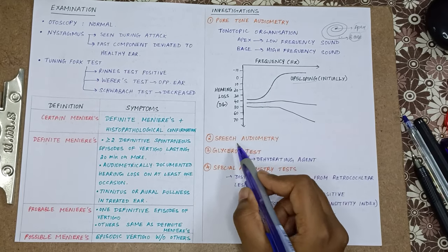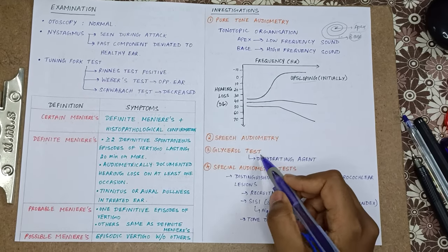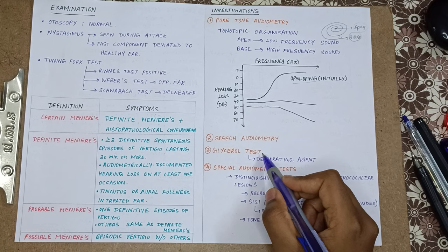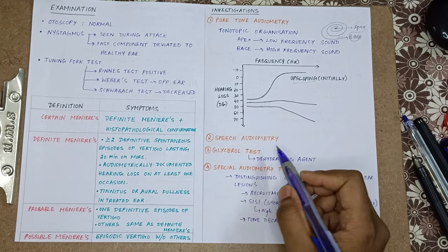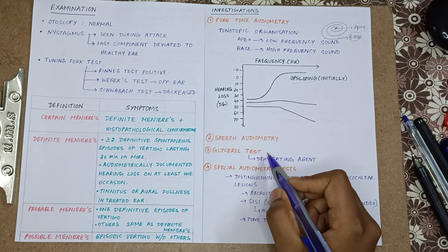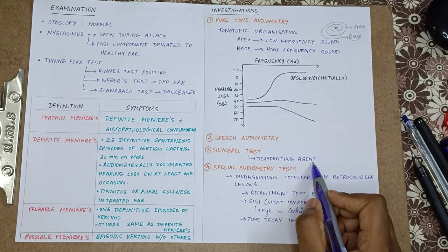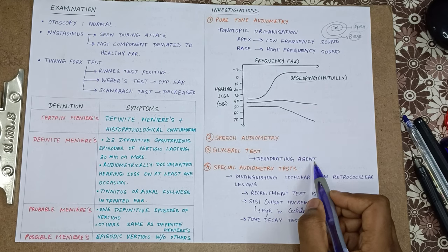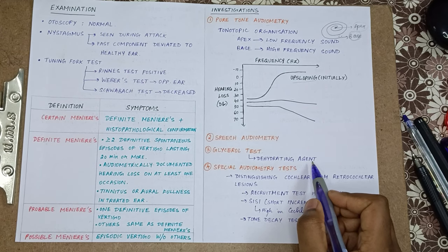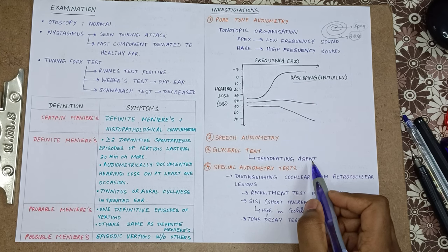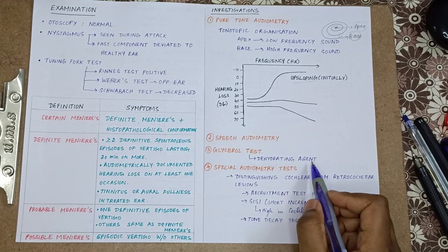After audiometry, you will do speech audiometry, then the glycerol test. Glycerol is a dehydrating agent — it is going to absorb the endolymph. In the glycerol test, you will have improved hearing, which is a sign of Meniere's disease, but it is not a specific test.